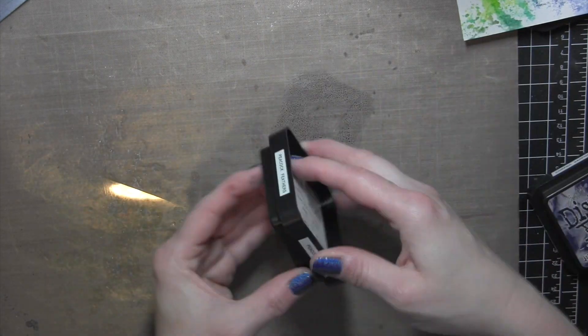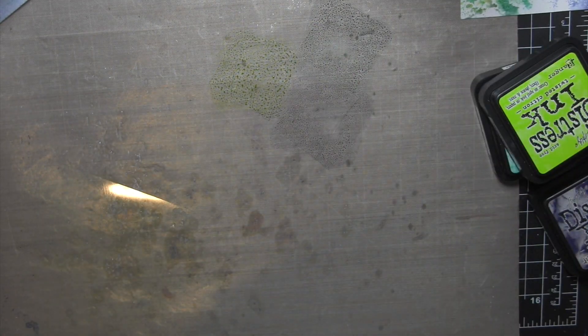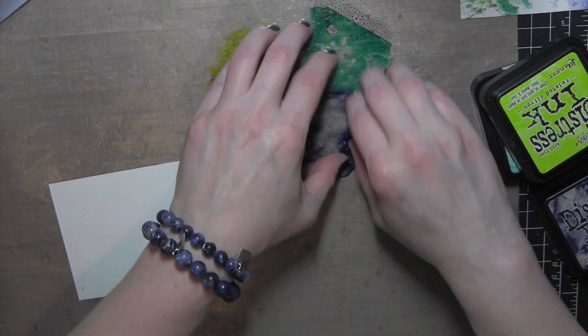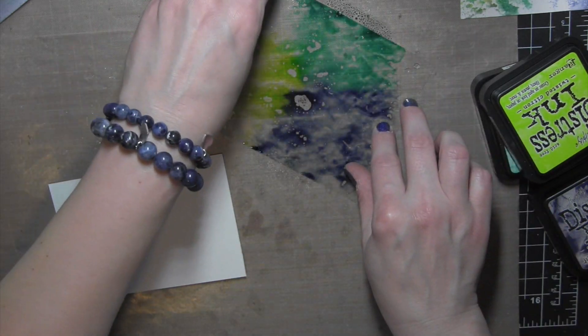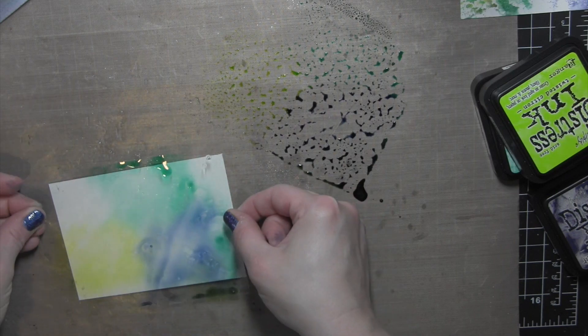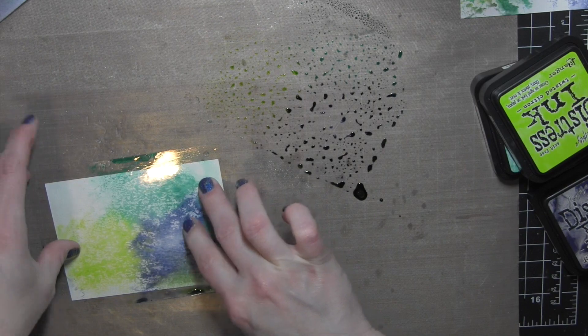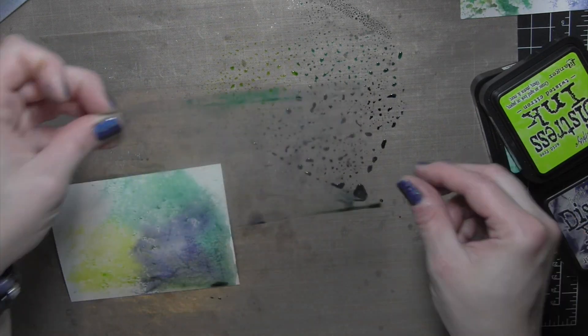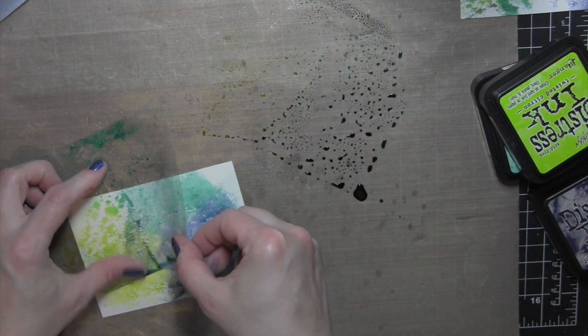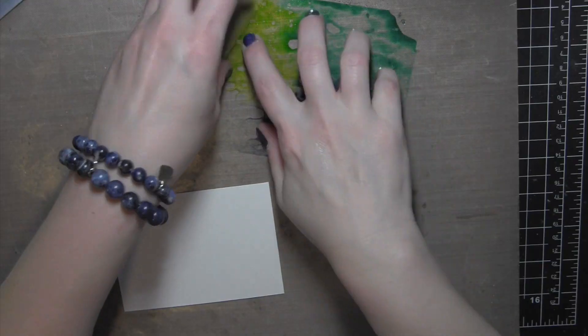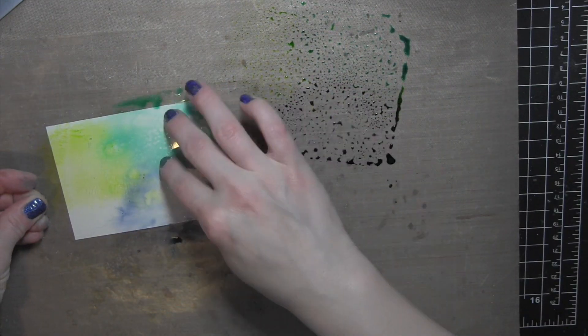I recommend cleaning up after each time. Go ahead and repress those inks onto your Ranger craft sheet, spritz them about two spritzes of water each. Place that scrap piece of acetate over the ink to pick it up and then transfer that right to that watercolor cardstock. And I like to press it around, pick it up and then if I think it needs to be moved anywhere or I need to move any of the ink anywhere, you can definitely press that a couple more times.